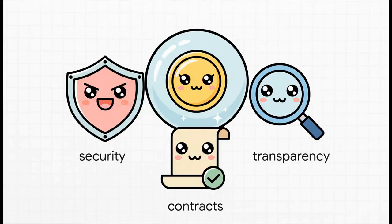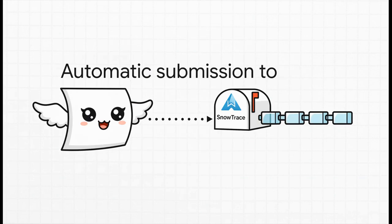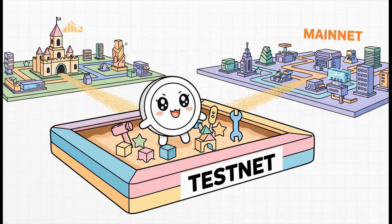But it's not just about cost. The platform is big on security and transparency. First up, audited contracts — they use security-reviewed templates to keep your project's risk way down. Next, your token gets automatically verified on SnowTrace, which means full transparency for everyone. And you always test everything on a free testnet first, so you can be sure before you go live.